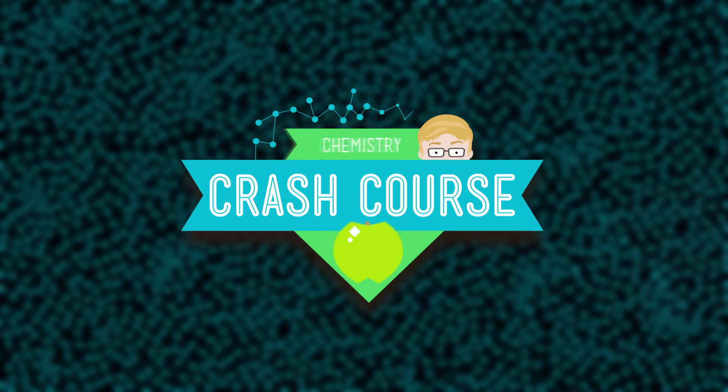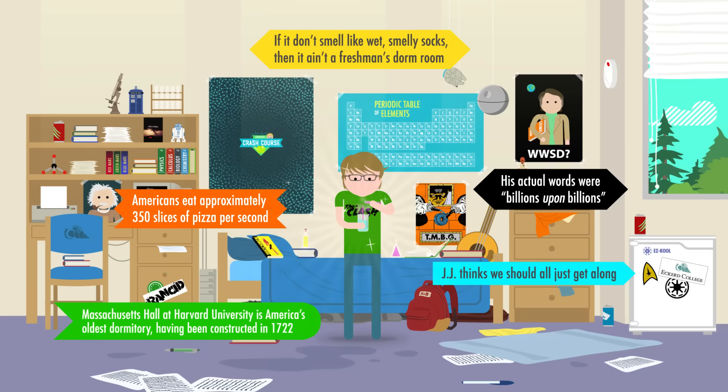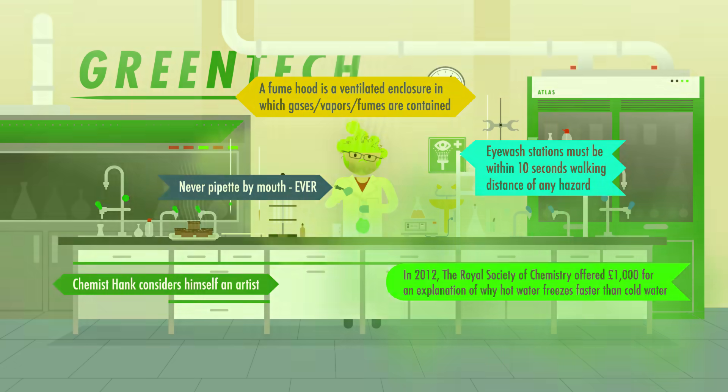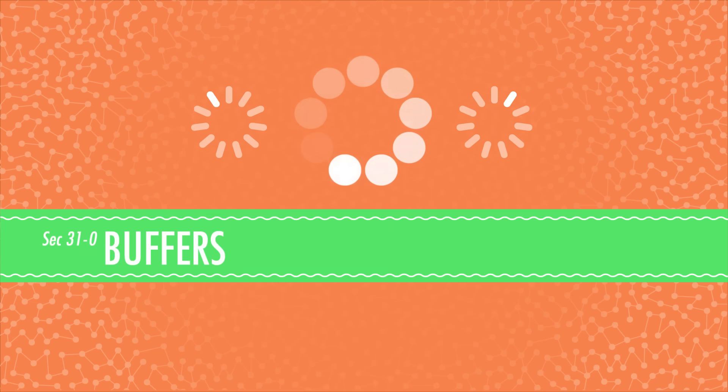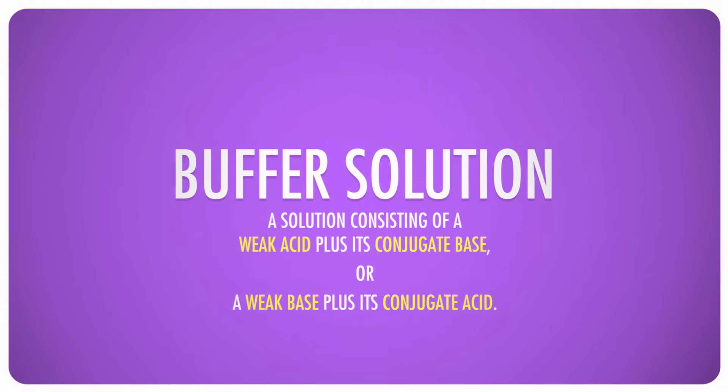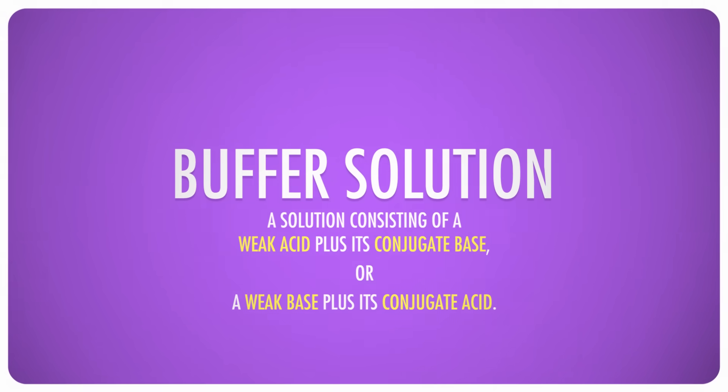Buffering is a big deal in chemistry. We buffer swimming pools to prevent the chemicals from damaging our skin, and we buffer soda pop to prevent the acidic flavorings from damaging our teeth and tissues. We even have buffers in our blood to keep our internal pH constant and ourselves healthy. A buffer solution is a mixture of a weak acid plus its conjugate base, or a weak base plus its conjugate acid.